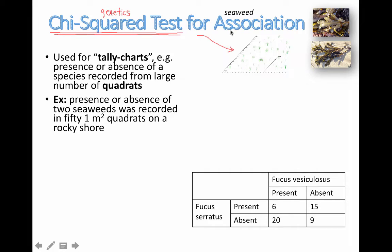For example, if we're looking at two types of seaweeds in a particular ecosystem, then we can be looking at maybe 50 total quadrats, and every quadrat we go to, we're going to mark down if this type of seaweed is there and if this type of seaweed is there. In this example here, the two types of seaweed are Fucus vesiculosus and Fucus serratus.